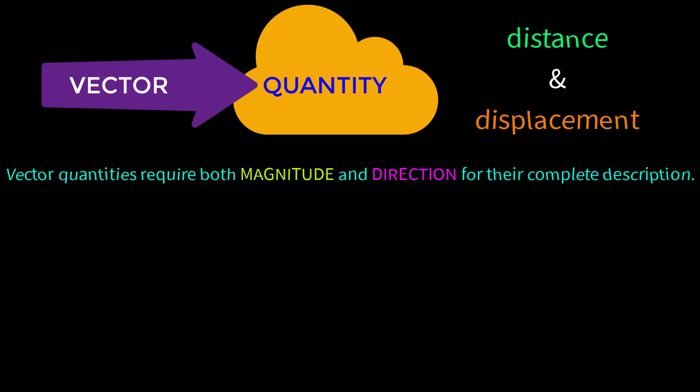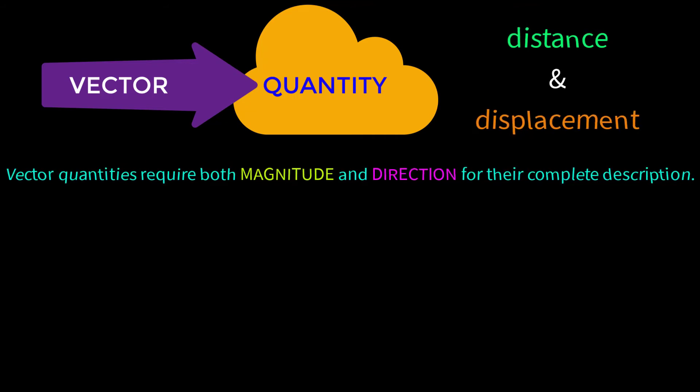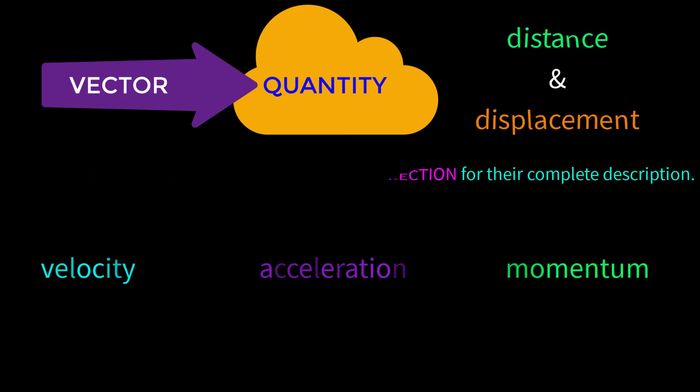In mathematics and physics we will get many quantities like this. Some more examples of vector quantities are velocity, acceleration, momentum, and so on. Now we will learn the representation of vectors. Geometrically, a vector is represented by an arrow-headed straight line.